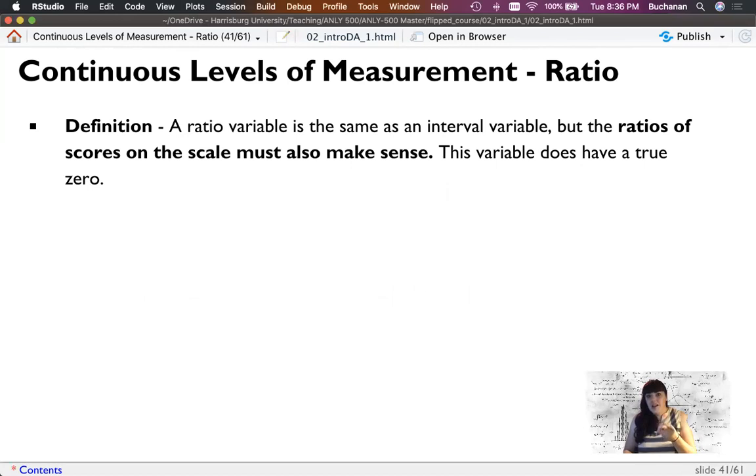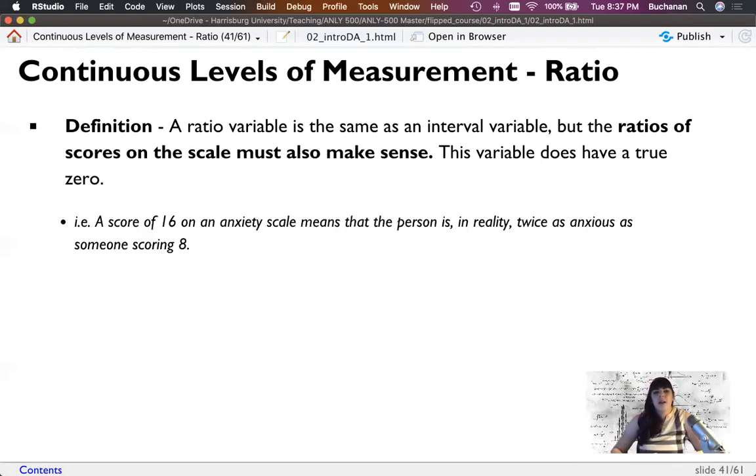So ratio data includes all the information from interval, but the ratios on the score of the scale also must make sense. So something that is a four is twice as much as the two. Now, a lot of times interval scales kind of have that, but they also have to have true zeros. Now, this doesn't mean that the scale can literally have a zero because height is technically a ratio scale. I mean, you wouldn't say something has a zero height, but theoretically, things could have an absence of height. It's kind of a weird concept, but you can't have an absence of temperature, but you can have an absence of height or absence of weight, especially when we talk about changes. So a score of 16 is twice as much as eight. If you don't have that, it's an interval scale.